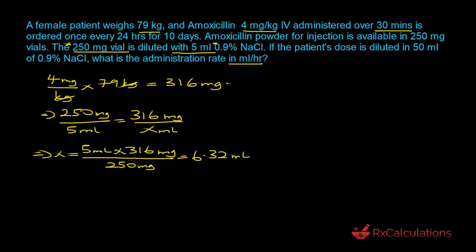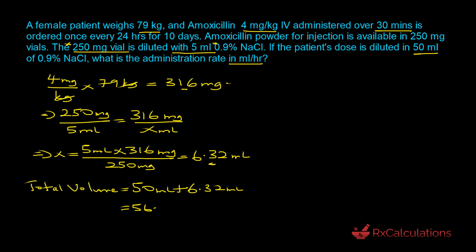The 6.32 milliliters of reconstituted amoxicillin — containing the 316 milligrams of drug — is going to be injected into the 50 mL small volume parenteral bag, and the whole thing will run to the patient. So the total volume to be administered equals the 50 mL bag plus the 6.32 mL we calculated, giving a total of 56.32 milliliters.